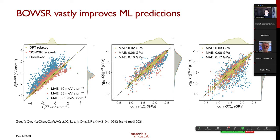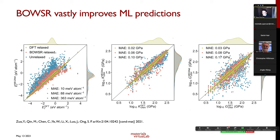Using the BOWSER-relaxed structure as input, we obtain a formation energy error of about 88 meV/atom — not the 28 meV/atom from DFT structures, but much closer and usable. The same improvement holds for bulk modulus and shear modulus predictions. Pre-relaxation significantly improves predictions from machine learning models across these properties.